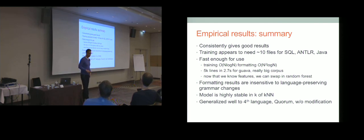A couple of other things to point out. Even for a very large corpus, like Guava, and with a very large file, it's sufficiently fast to format these files, even with a k-nearest neighbor. If we change it out for a random forest, I suspect it will be much, much faster.